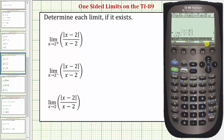Notice how the only difference between the first limit and the second limit is that here we're approaching two from the right or positive side, and in the second we're approaching two from the negative or left side. But just for review, let's go through this process again.